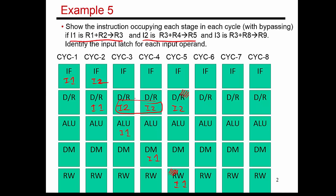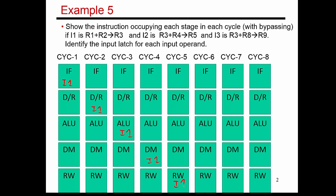Let me explain how that's done. Let's look at instruction 1 going through the pipeline — its behavior is unaffected, so it goes through these five stages without any stall cycles. Now instruction 2 wants to read the value of R3. Let's track where that value of R3 is at all times. Let's say R1 was 5, R2 was 7, and the result being produced is 12. I'm going to draw the latches: L2, L3, L4, and L5.